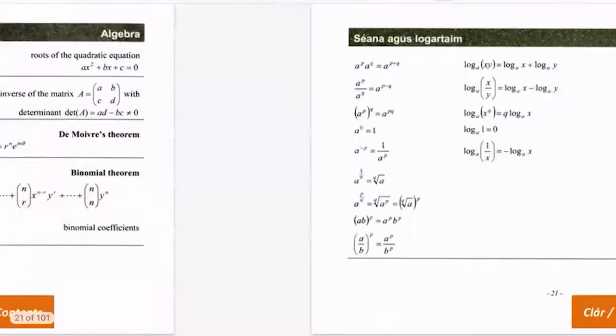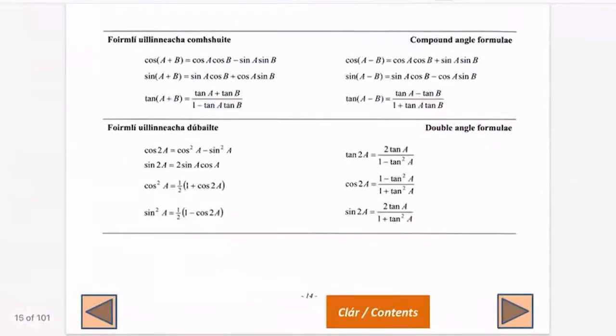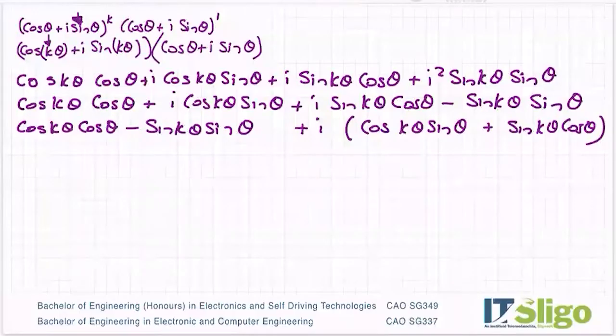And then what we do then is we look for trig identities that sum up these. So go to page, I think it's 16. This one here.